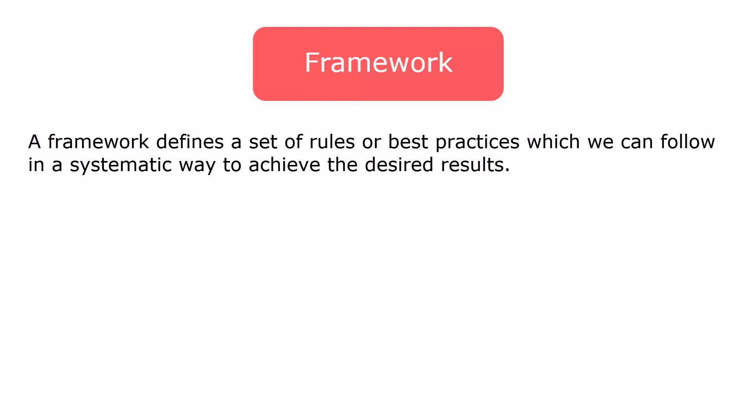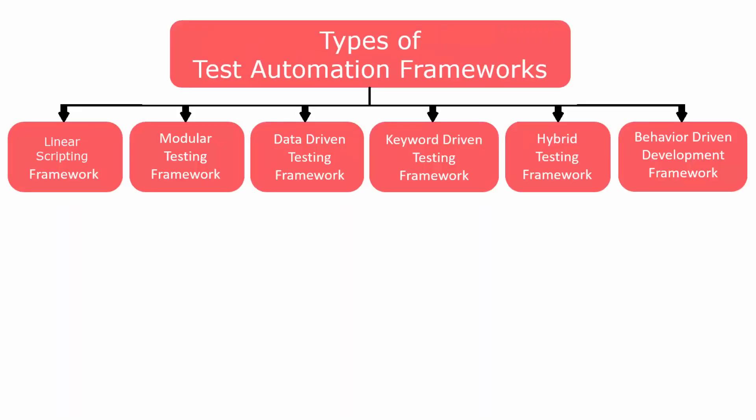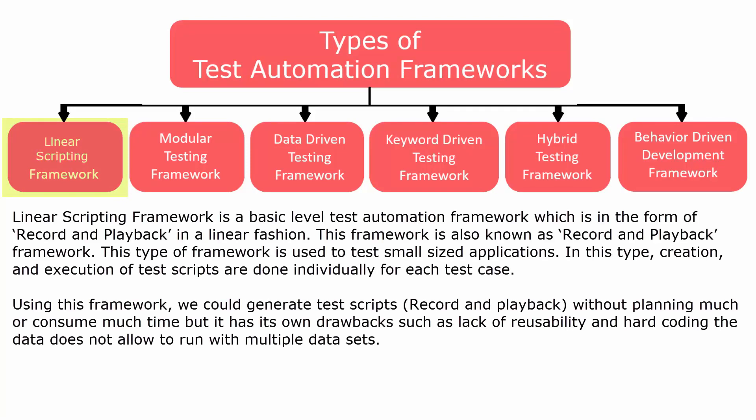Linear scripting framework is a basic level test automation framework in the form of record and playback in a linear fashion. This framework is also known as the record and playback framework. It is used to test small-sized applications. Creation and execution of test scripts are done individually for each test case. We could generate test scripts without much planning, but drawbacks include lack of reusability, hard-coded data, and inability to run with multiple data sets.